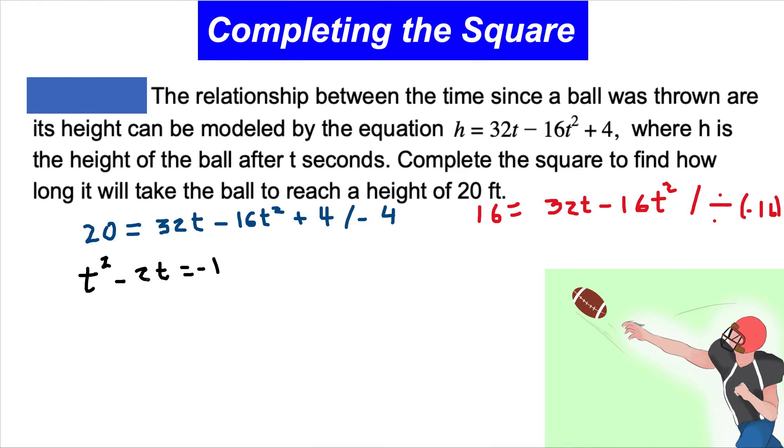To complete the square, b is 2, divided by 2 equals 1, and 1 squared equals 1.